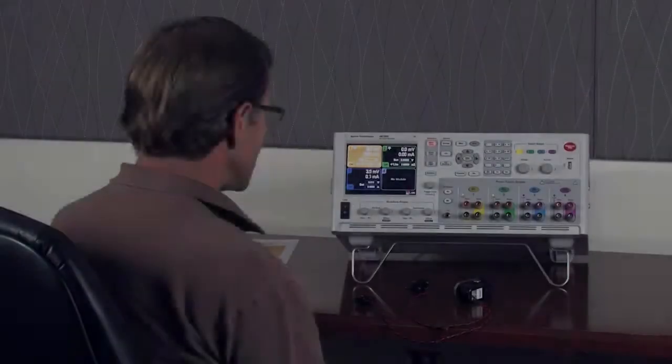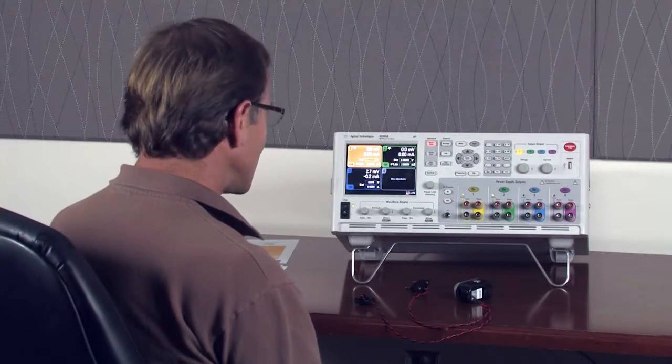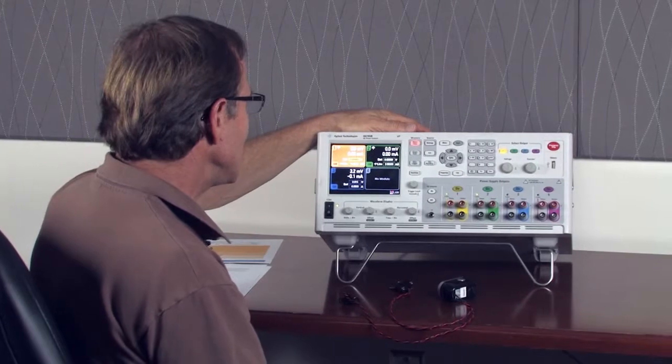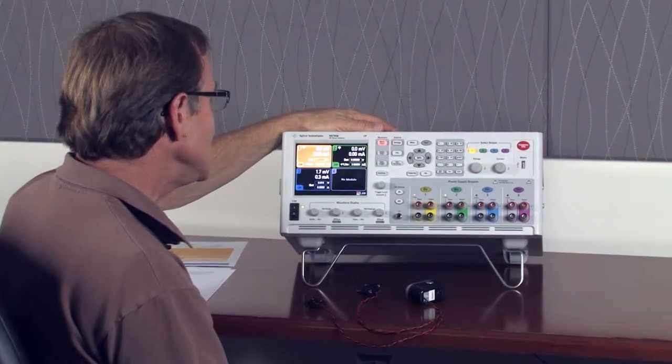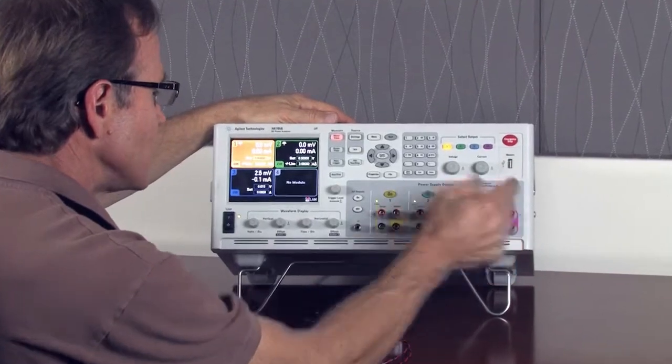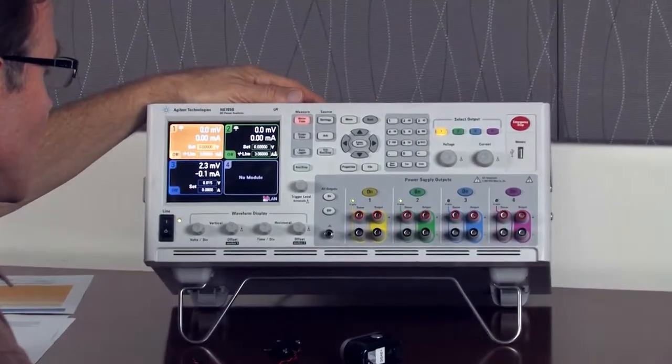Step one is configuring the hardware and connecting our medical device. The hardware for our demo today is an N6705B DC power analyzer, and it has four separate modules. We're going to only use module number one, and that is an N6781A source measurement unit or SMU.